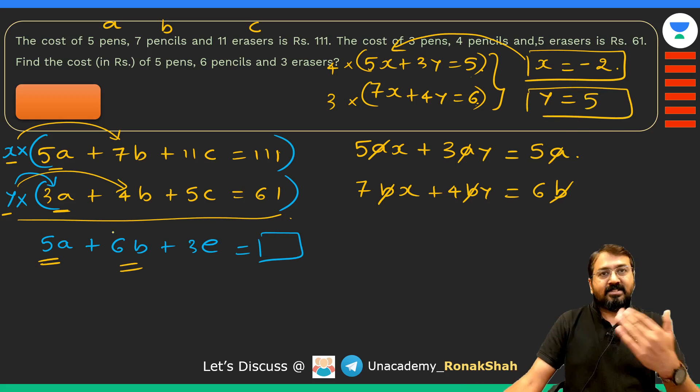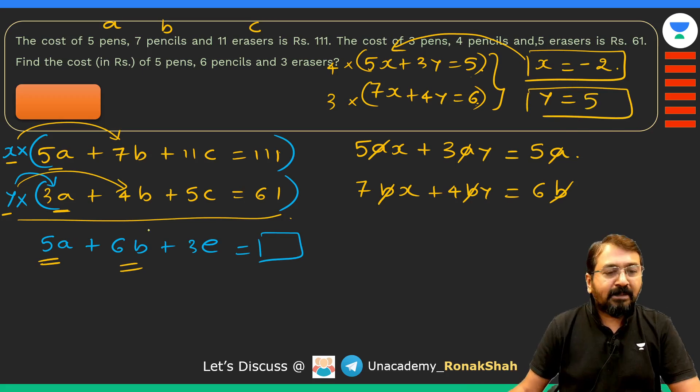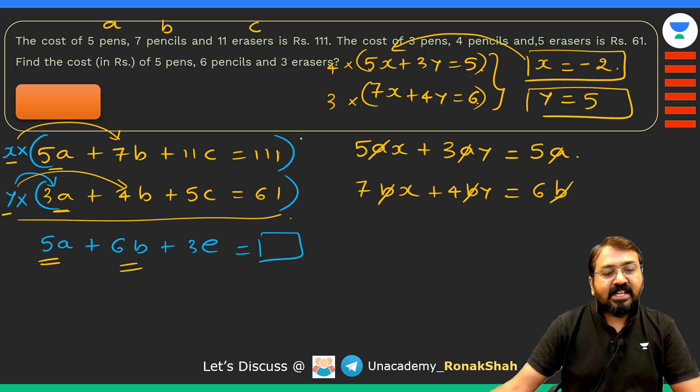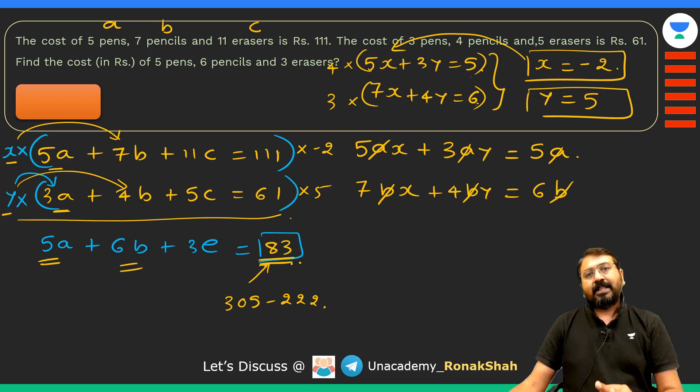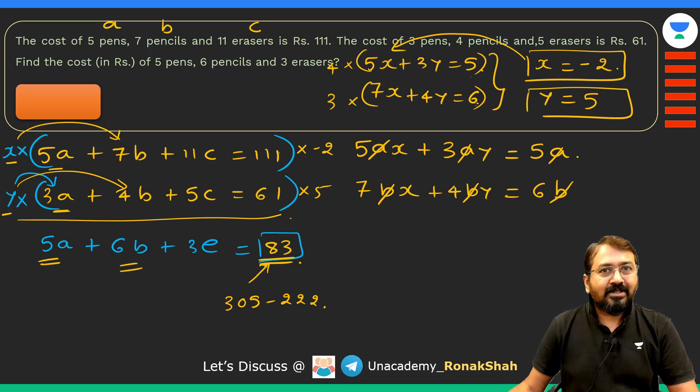This is how we can quickly find out the multiplying factor. What will be my final answer? I am multiplying the first equation by minus 2, second equation by 5, and adding them. This will be minus 222, this will be 305, so my answer will be 305 minus 222, that is 83 rupees.